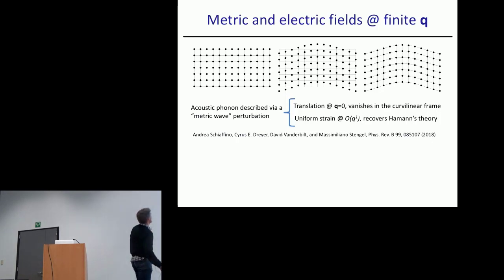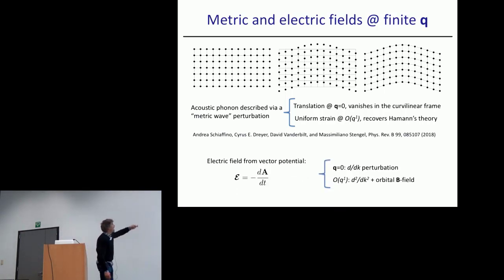We define an acoustic phonon as a simultaneous displacement of all atoms—a sublattice sum of the phonon perturbations. Instead of treating it in the laboratory frame, we do a simultaneous coordinate transformation to a curvilinear frame where the atoms do not move from their position, a curvilinear frame that follows the atomic position. By doing this, you get a sort of metric wave that at Q equals zero vanishes because in the curvilinear frame these translations are irrelevant, and at first order in Q we exactly recover Don Hamann's theory of uniform strain.